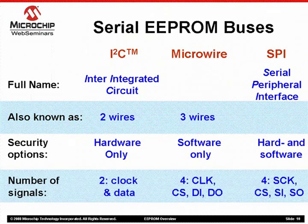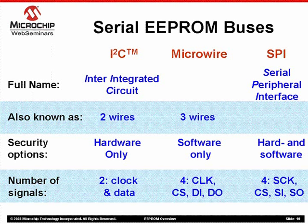Let's pay special attention to the number of signal lines between the EEPROM and the microcontroller. I2C devices only have two signal lines to the micro: a clock signal and one data signal that carries both incoming and outgoing data. Microwire and SPI devices both require four IOs — independent data in and data out lines, as well as a chip select and a clock. An advantage of I2C is that it only uses two I/O ports on the microcontroller. But what if you would like to connect an external EEPROM to a micro using only one I/O pin? Microchip has developed its UNIO protocol, which does just that. Let's talk more about the UNIO bus and UNIO EEPROMs on the next slide.